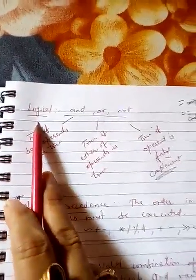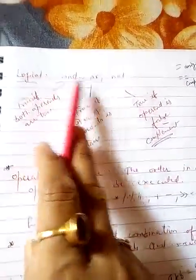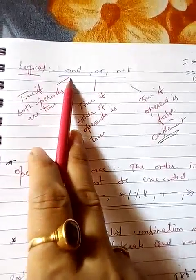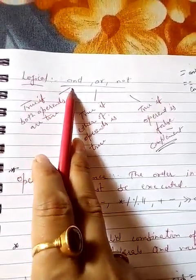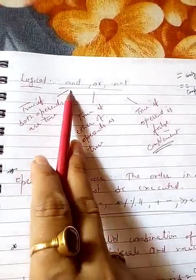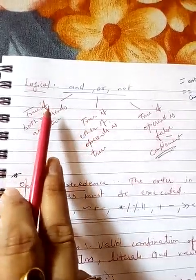Now the next one is logical operator. Logical operator will include here and, or and not. And operator it will give you true value if both the operands or the conditions are true.